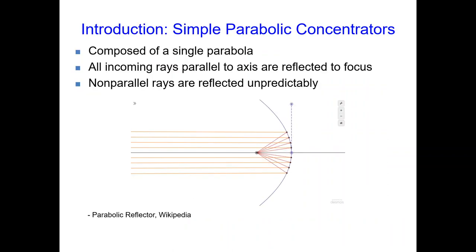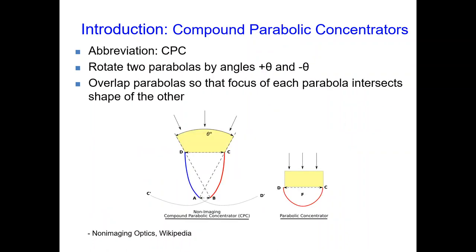There are many concentrator shapes which can be used. This project mainly investigated parabolic designs. The first example is a simple parabolic concentrator, which is essentially just a single parabola. All rays parallel to the axis get reflected into the focus due to the properties of the parabola. However, if the rays are not parallel to the axis, even by a tiny bit, they will be reflected wildly. The second type investigated was a CPC, or compound parabolic concentrator.